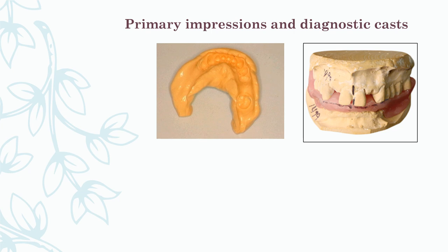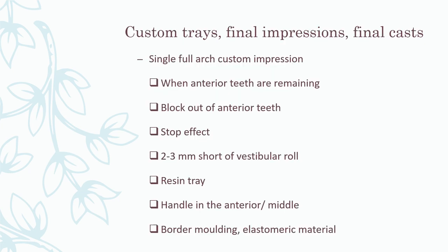Once the oral cavity is prepared, primary impressions are made using an alginate impression, producing a diagnostic cast. At this stage, an inter-occlusal record is also obtained and the cast is mounted on a mean value articulator for observation and study of the diagnostic mounting.